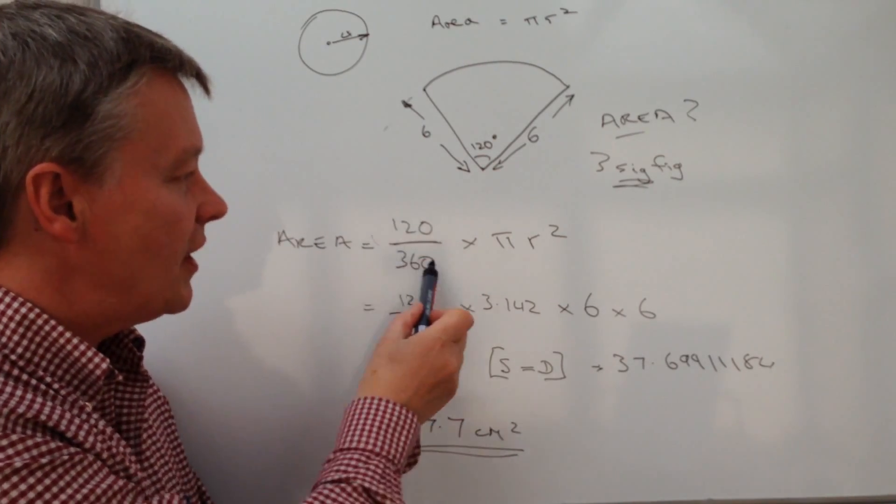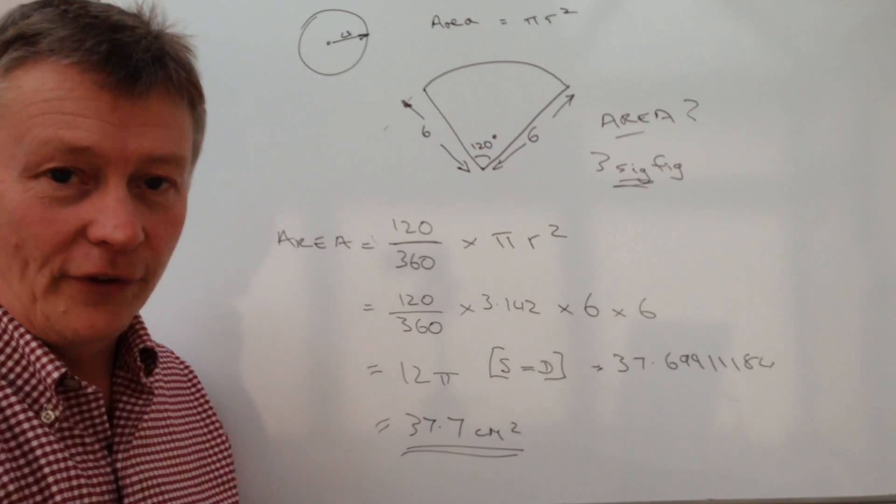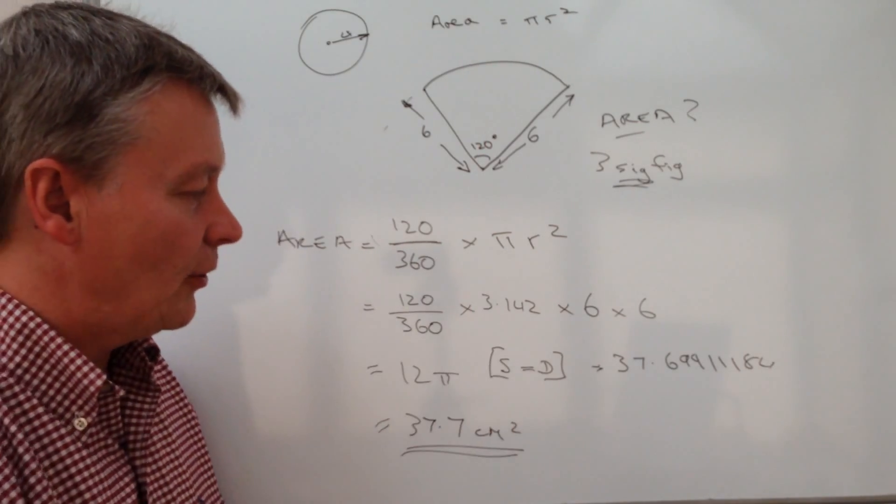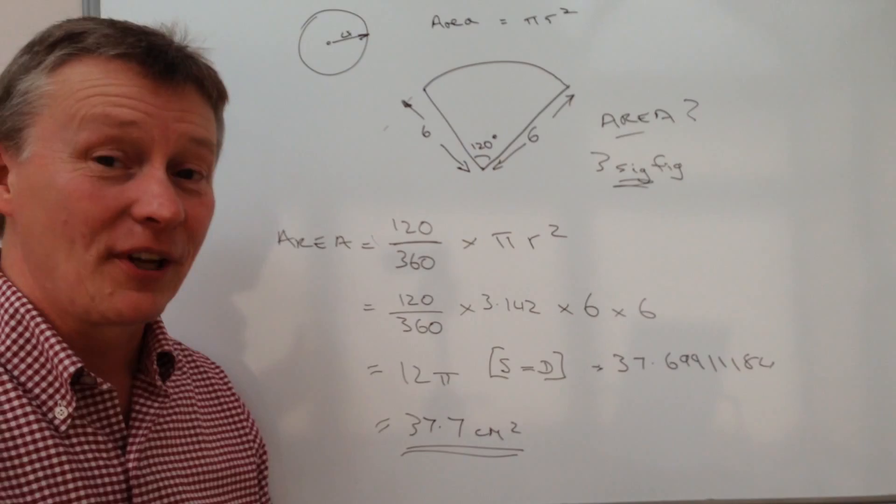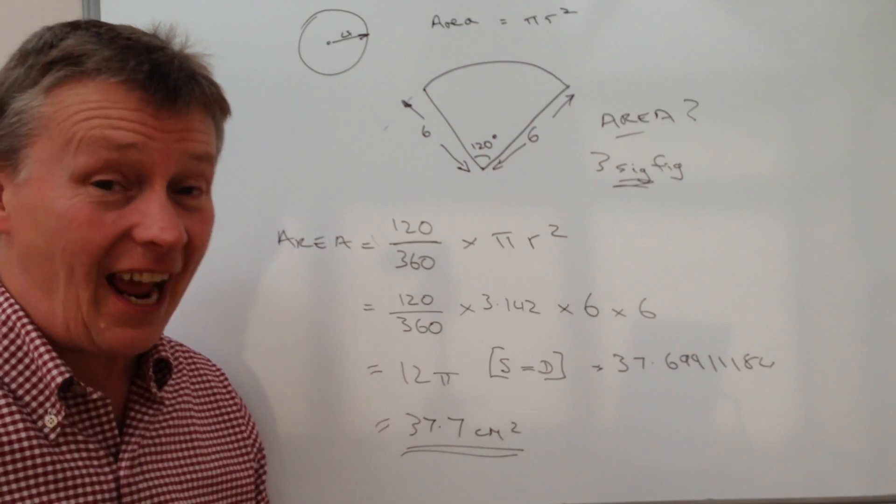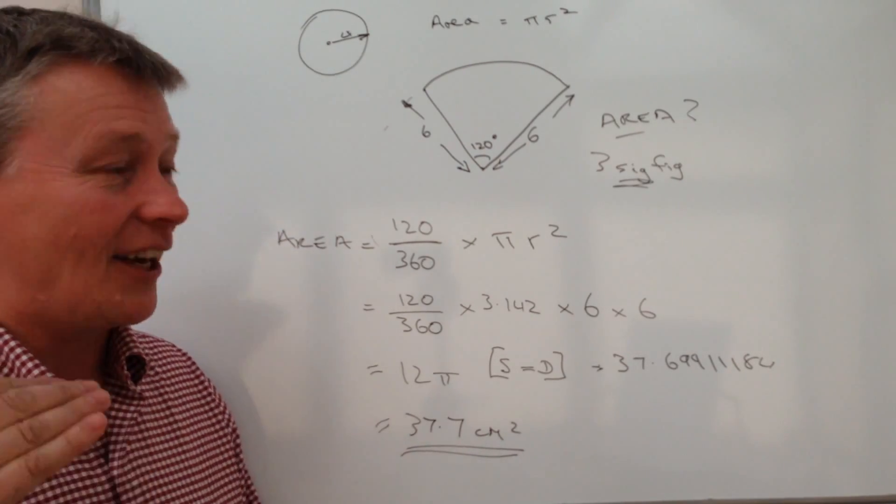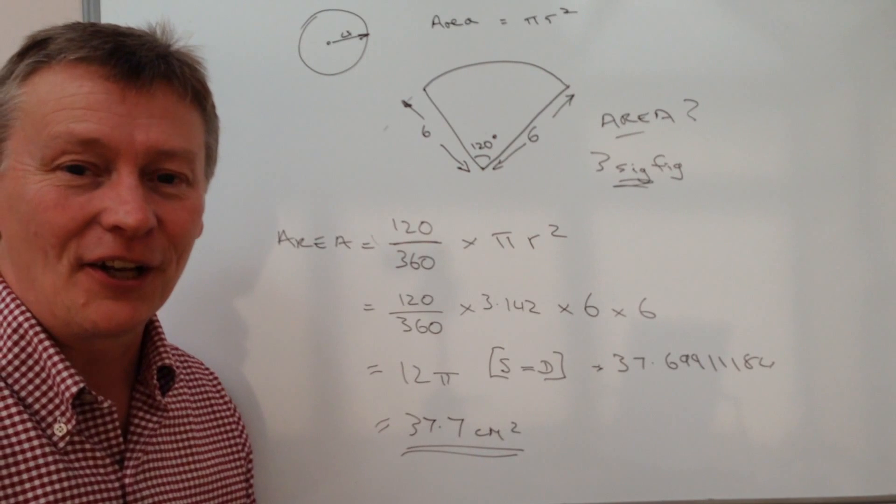But providing you remember that pi r squared is the area of the overall circle, then you can use this whole idea of a fraction of the circle in order to calculate and answer the question. I hope that's okay. Please do subscribe to the site, add a comment below, and I'll look forward to seeing you inside the next video.